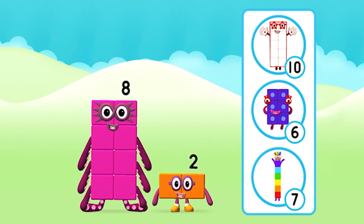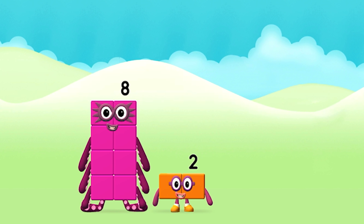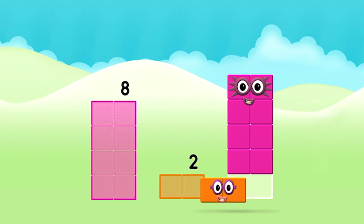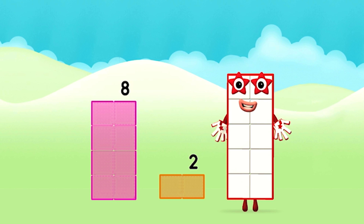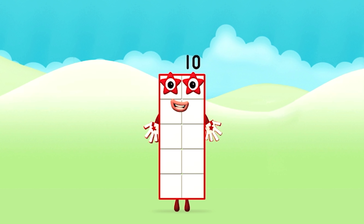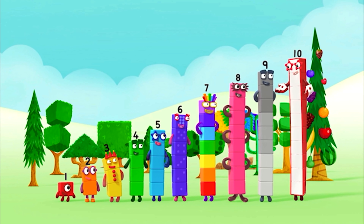Which number block do you think adding these together will equal? Correct! You chose the right answer! Eight. Add the number blocks together! Eight, two — eight plus two equals ten! Well done! You made number block ten! One, two, three, four, five, six, seven, eight, nine, ten!